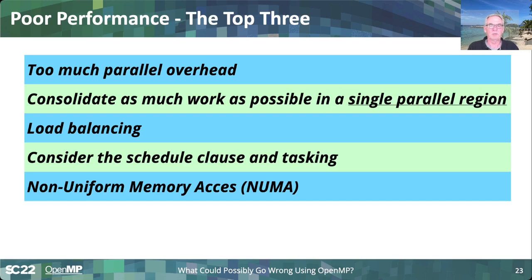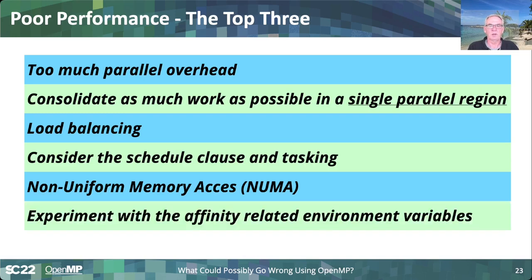Last but not least, a really big topic: non-uniform memory access, NUMA. Most systems today are NUMA, and there's no easy escape from that — it's just hardware. It's a topic in itself, and there are several talks about NUMA tuning. Essentially, you experiment with the OpenMP affinity-related environment variables. Affinity is like a different word for NUMA — you want to keep your threads and data close, increasing affinity. There are environment variables in OpenMP to help with that, and there's a lot of information available.